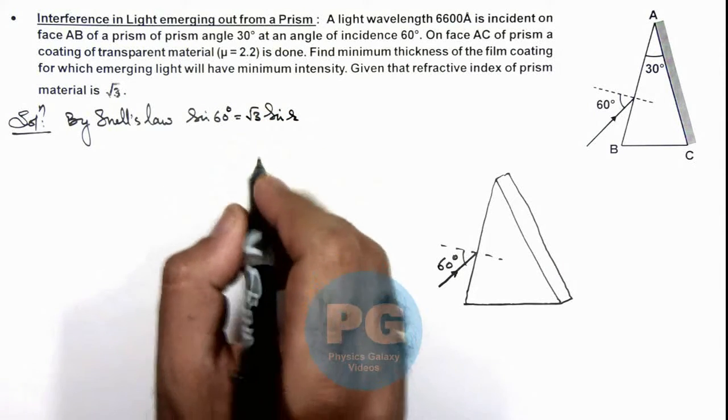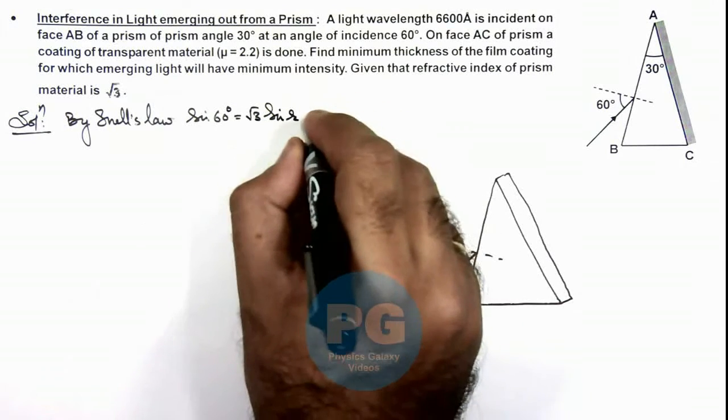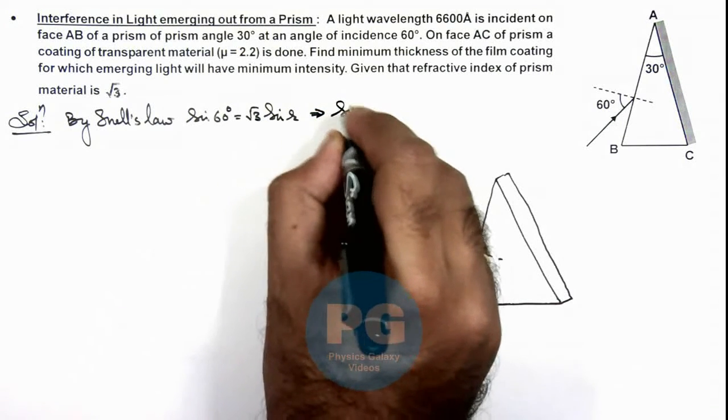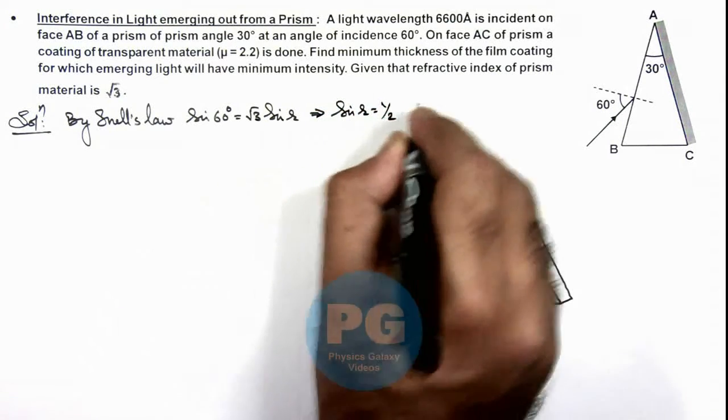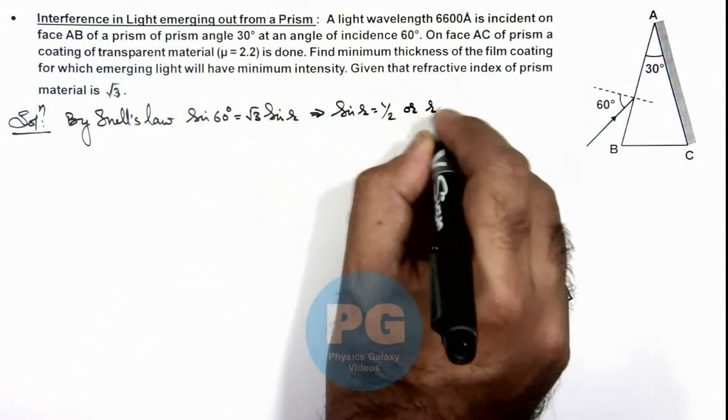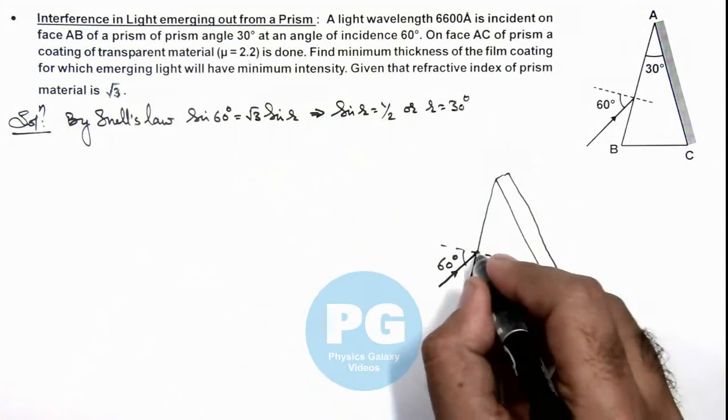Then sine 60 degree we can write as root 3 by 2, which implies sine r equals 1 by 2, or r equals 30 degree.